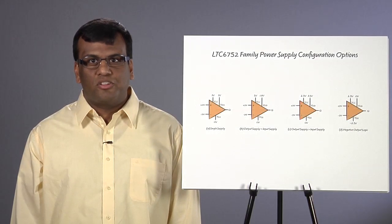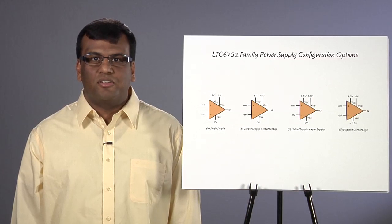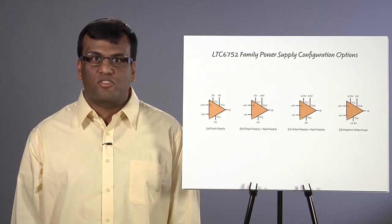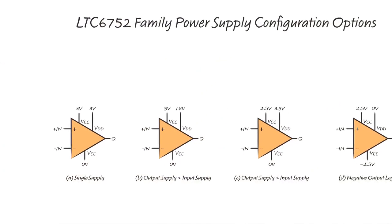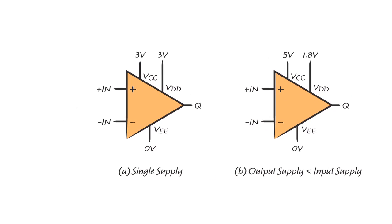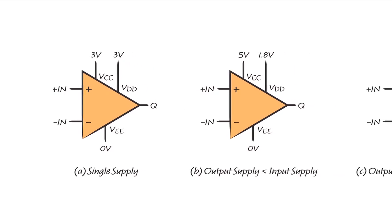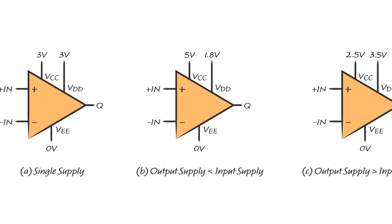The output voltage logic levels are decoupled from the input signals in various ways. The output signal level can match the input signal range, as shown in the first figure, accommodating a 3V input range and a 3V to 0V output level. They can be separate, with a 1.8V output logic level and a 5V input signal range, as in the second figure.